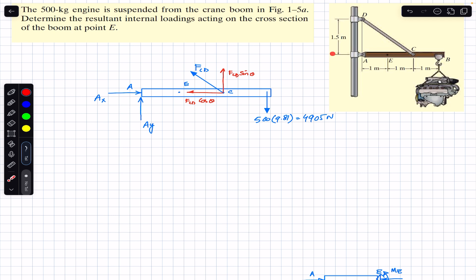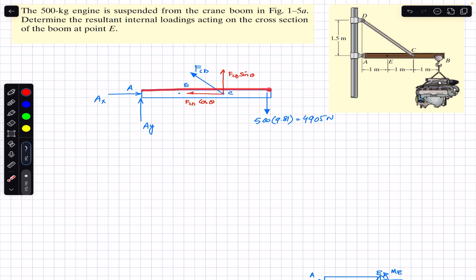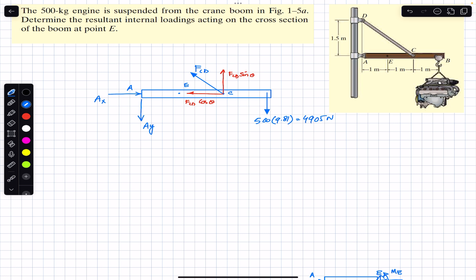The first step is to find the reactions at point E. If we consider the AB part of the crane boom — beam AB — we need to draw the free body diagram. At point A, since the beam is supported by a pin support, we will have two support reactions: an Ax reaction and an Ay reaction, with Ay assumed acting in the downward direction.